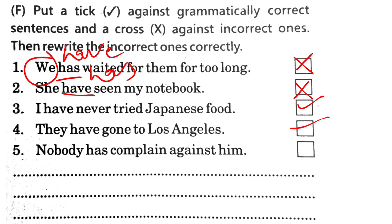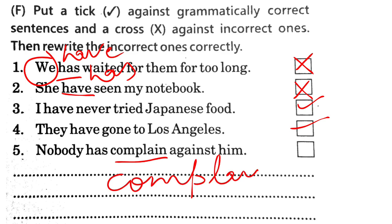'Nobody has complained against him.' Here, as per sentence structure, we need the third form of the verb, which is 'complained'. So 'Nobody has complained against him' is the correct answer. The original sentence was wrong.